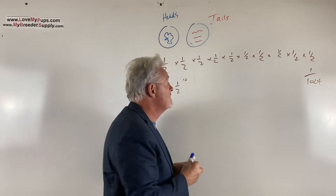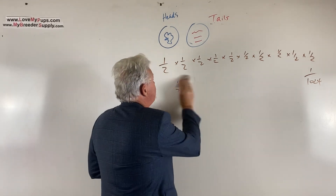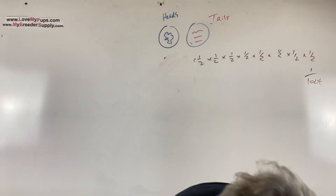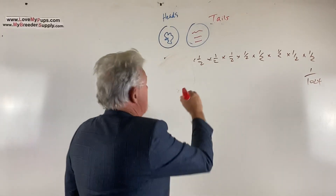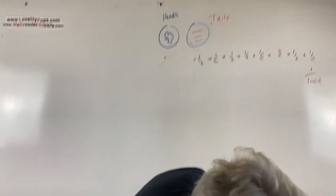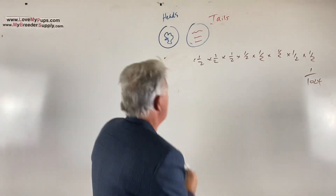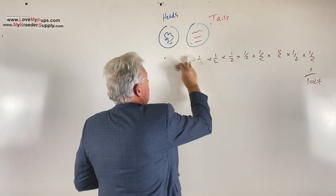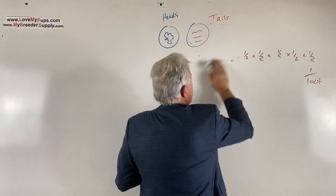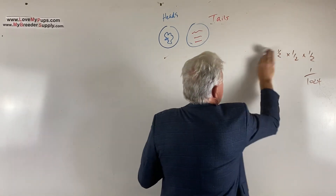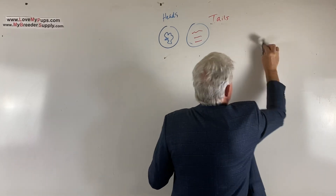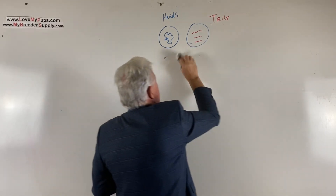When you start working out probabilities of multiple things happening together, you multiply the probabilities together. Now I want to bring up another important point: the difference between posterior probabilities — something that is conditional on something else having happened first.